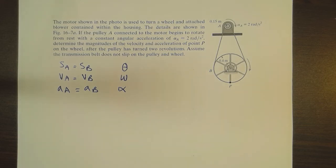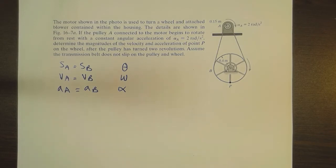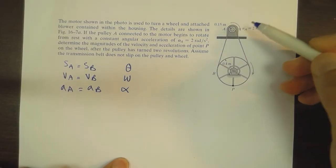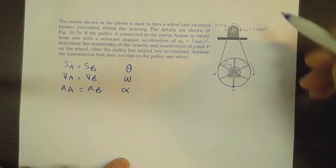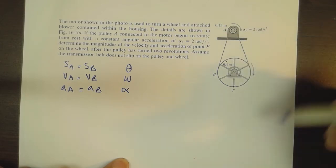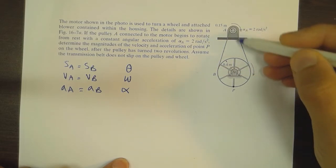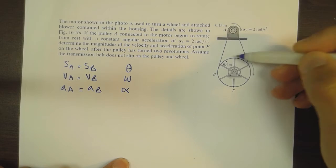Good morning and welcome to my new tutorial on Planar Rigid Body Motion, Translation and Rotation. I'm going to solve an example involving a pulley that rotates with a constant angular acceleration of two rad/s squared. With the rotation of the pulley, it makes this big wheel rotate because of the belt that is firmly connecting both the pulley and the big wheel.